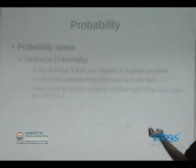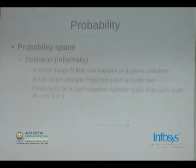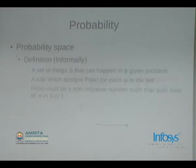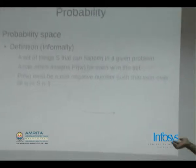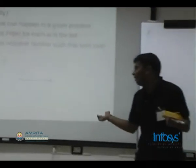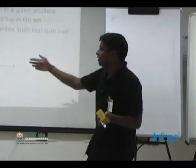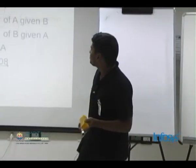Such a system or triplet is called a probability space — just to be mathematically complete. Let's go to the next slide.